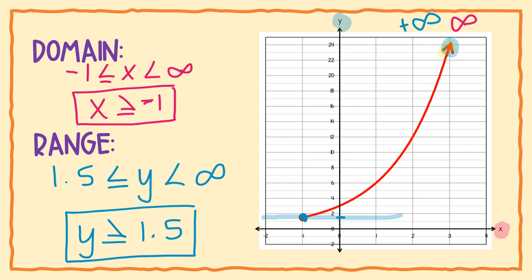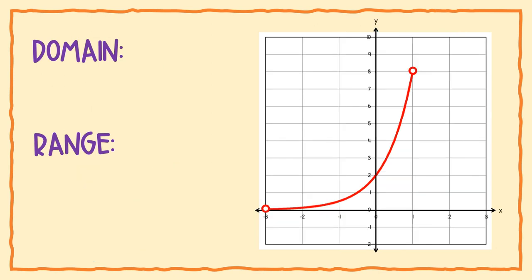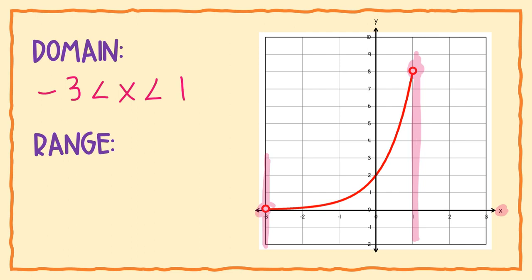Last example, again with two endpoints. For domain on the x axis, the lowest number is negative 3 and the highest is positive 1. Both endpoints are open, so no underlines — it's negative 3 is less than x is less than positive 1. For range on the y axis, the bottom is at 0 and the top is at 8. Both endpoints are open, so the range is 0 is less than y is less than 8.